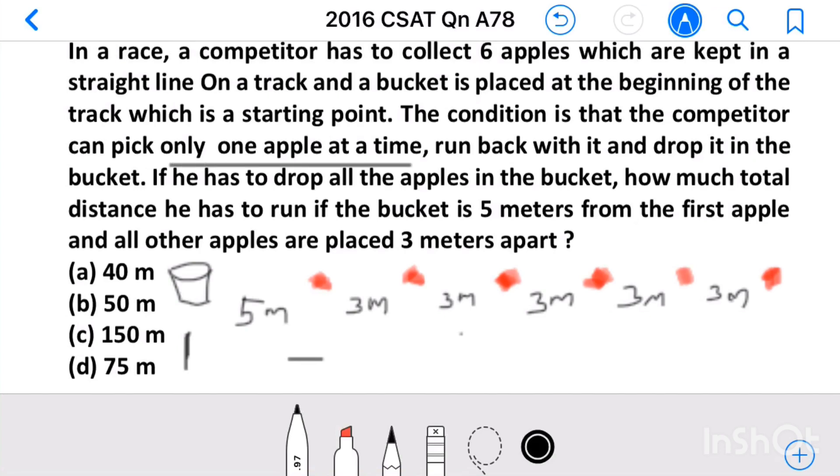If he has to drop all the apples in the bucket, how much total distance he has to run if the bucket is 5 meters from the first apple and all other apples are placed 3 meters apart.